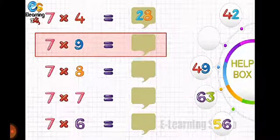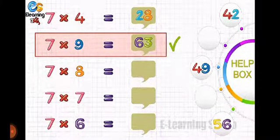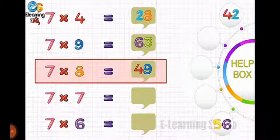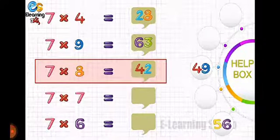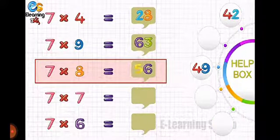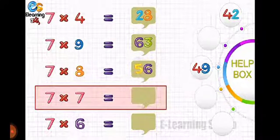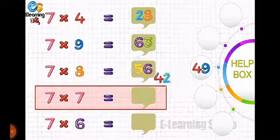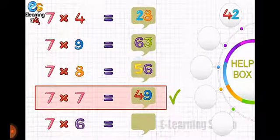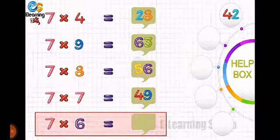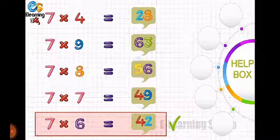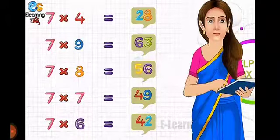Is it sixty-three? Yes, that's the right answer! Seven nines are sixty-three. Now seven eights are — is it forty-nine? Wrong. Is it forty-two? Wrong. Seven eights are fifty-six, that's the right answer. Seven sevens are forty-nine, that's correct. And the last one, seven sixes are forty-two. That's the right answer! We have completed the activity.